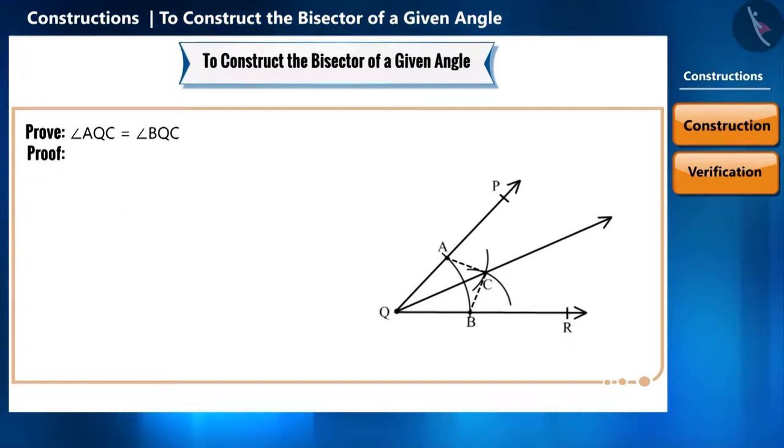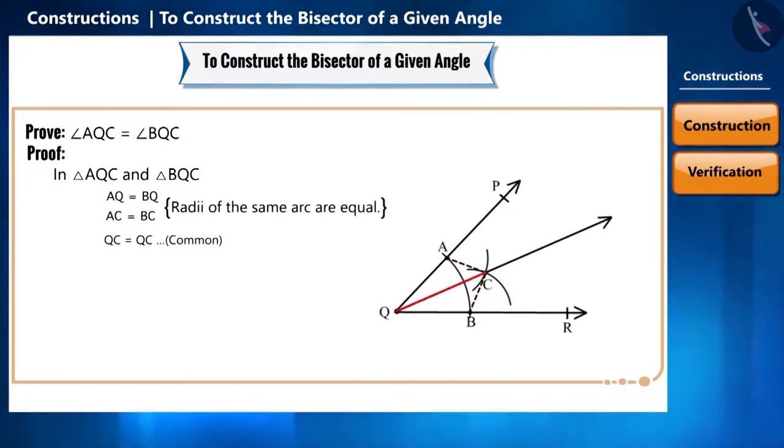Let's start. First of all, AQ is equal to BQ because they are the radii of the same arc. AC is equal to BC because they are the radii of the same arc. And QC is the common side. Therefore, triangle AQC and triangle BQC are congruent by the SSS, side-side-side congruence rule.